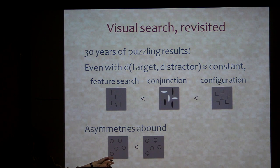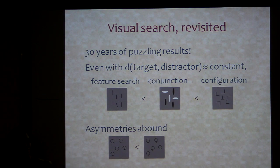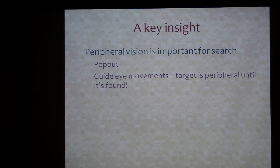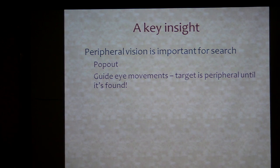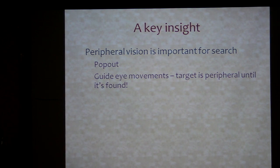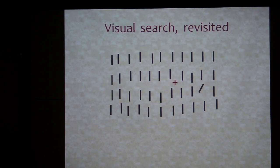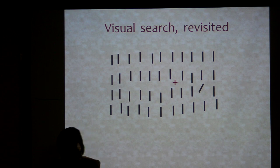Furthermore, the most damning evidence against search being about target-distractor differences is that there are asymmetries all over the place — searching for a Q among O's is a lot easier than searching for an O among Q's. We're suggesting that peripheral vision must be important for search, because if something pops out, the whole point is that you notice it without looking right at it. And search is going to be really hard if you don't have peripheral vision to guide your eye movements to the target.